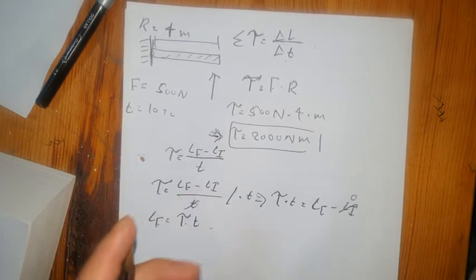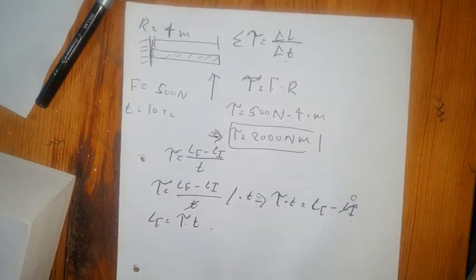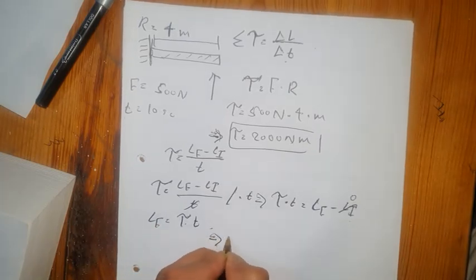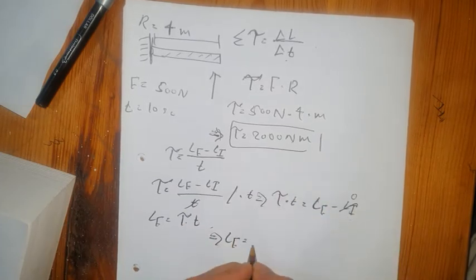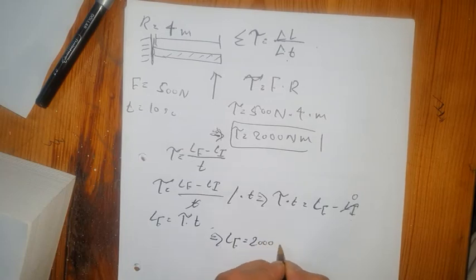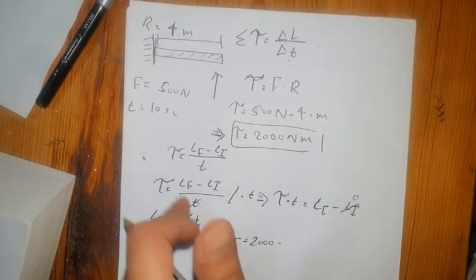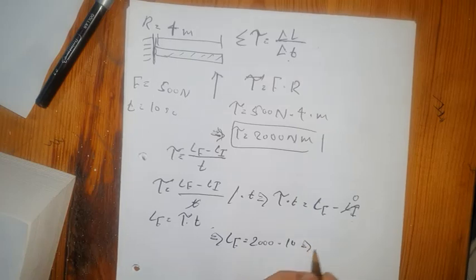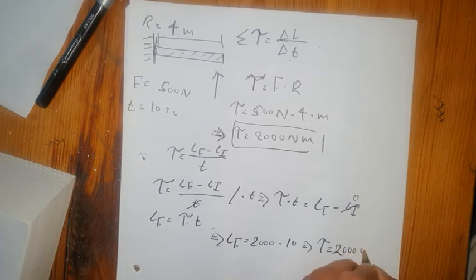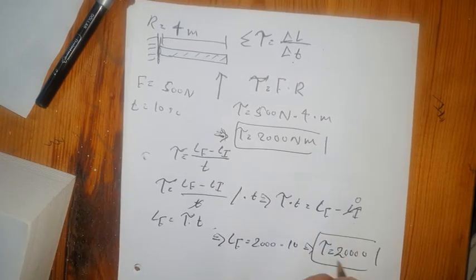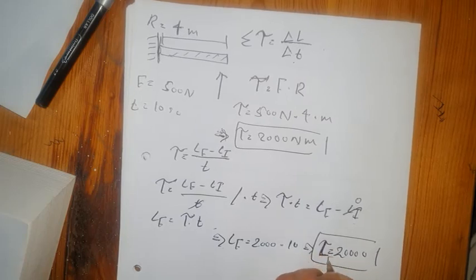Now we put all the values into the formula. Final angular momentum equals torque times time, which is 2000 times 10 seconds, giving us a final angular momentum of 20,000 kilogram meters squared.